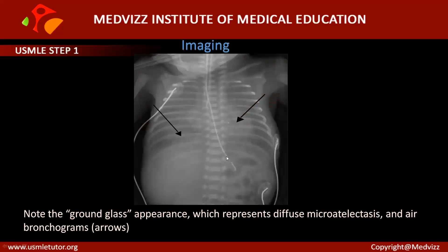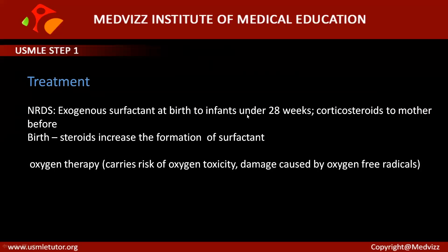On imaging, there will be a very clear ground-glass appearance, which is the typical sign for microatelectasis. Air bronchograms also reveal the microatelectasis. The arrow mark in this picture indicates the ground-glass appearance.